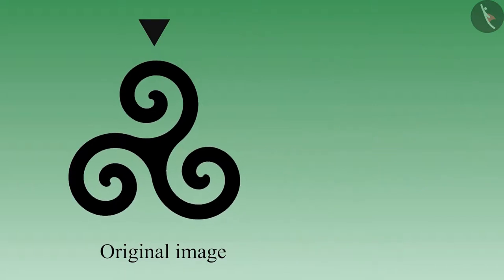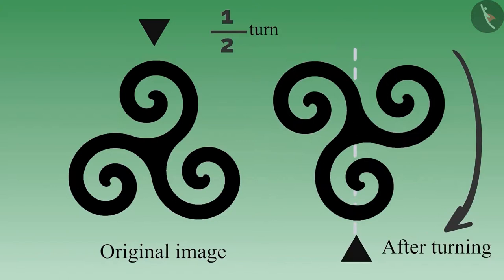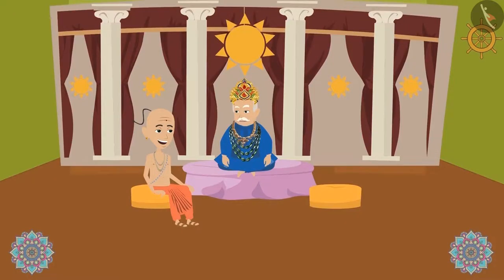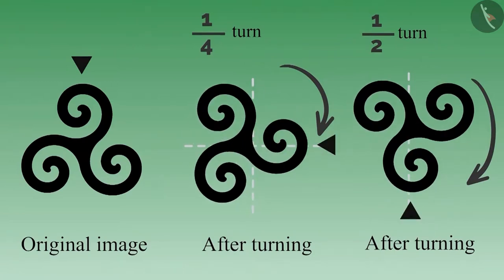Come, let's turn it by one-fourth and see. Your highness, this looks different. Let's once turn it by half and see, Tenali Ramaji. It still looks different. Why is it so, Tenali Ramaji? Your highness, it means that we cannot use half or one-fourth rotational symmetry with this image.